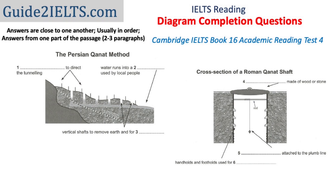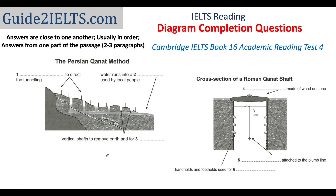Looking at all three questions: the first question has arrows to certain vertical structures and it says 'blank to direct the tunneling.' The second one mentions water and local people. The third one mentions vertical shafts and earth. These are the words I keep in mind.